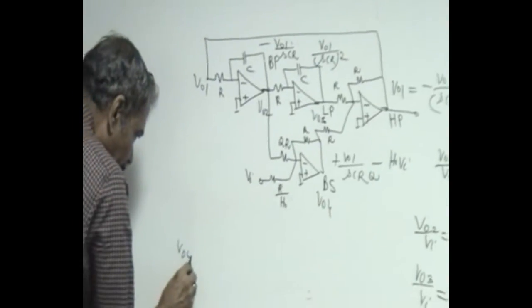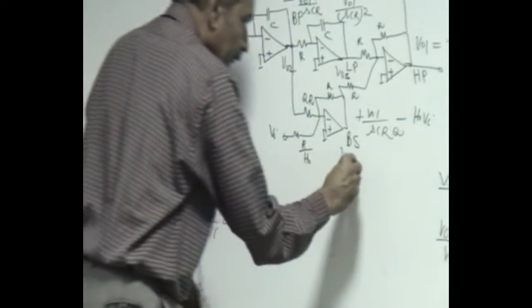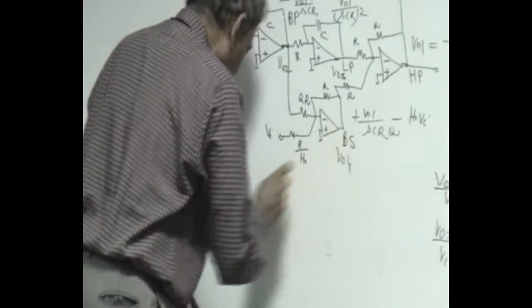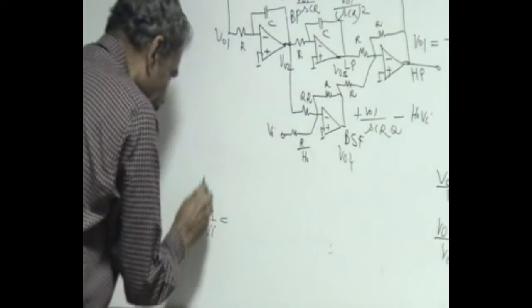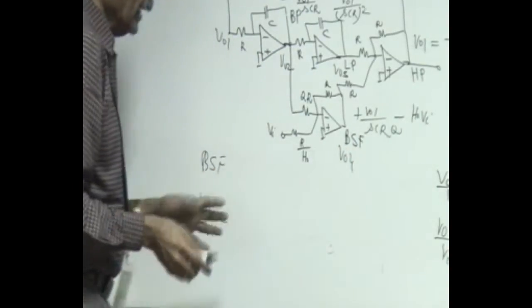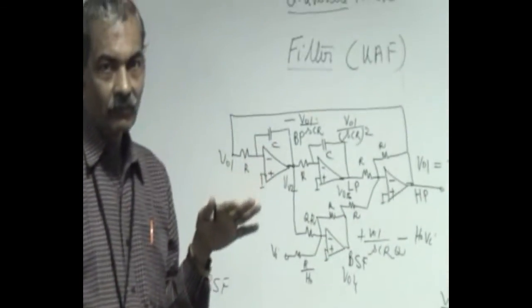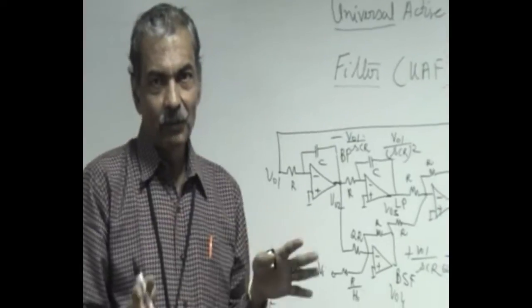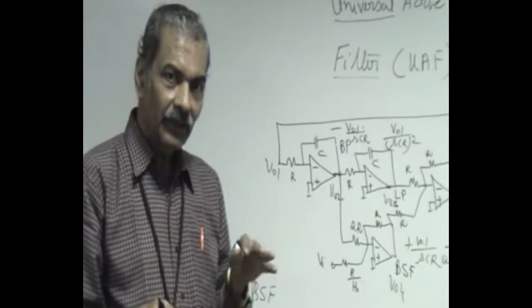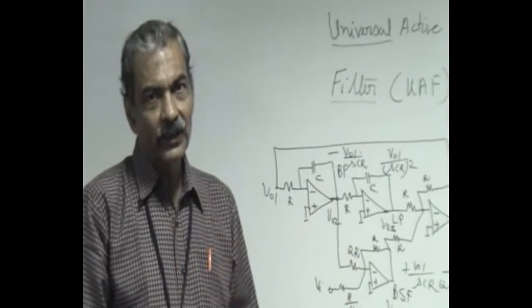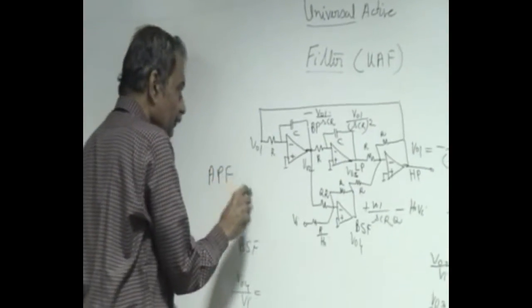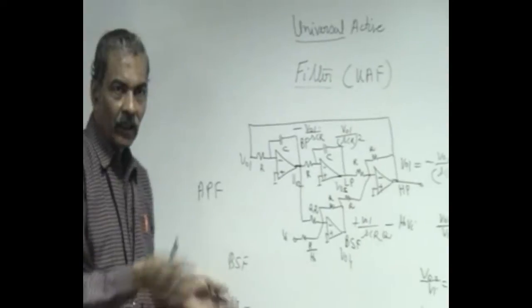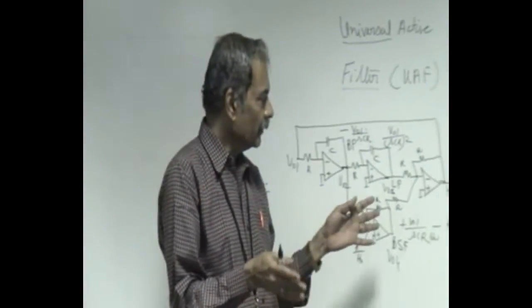And if you take V naught 4 we can show that V naught 4 by V_I is another important second order function which is called all pass or band stop or band elimination. All pass is a combination of high pass low pass and band pass such that the location of the zero is a mirror image of the location of the poles. Therefore, all pass filter can be designed by simply summing up these three outputs of the low pass high pass and band pass appropriately.